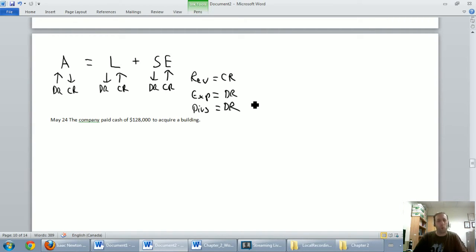So we bought a building for cash. Was cash involved? Yes. What's cash doing? Going up or down? Well, we paid cash, so it's going down. It's an asset. Cash is like the main asset. It's going down. Let's credit cash for $128,000. That's quite a bit of dough.